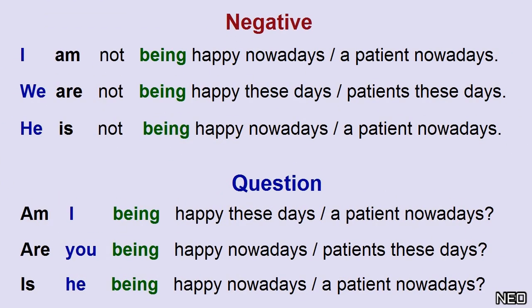Negative: I am not being happy nowadays. We are not being happy nowadays. He is not being happy nowadays. Question: Am I being happy these days? Are you being happy nowadays? Is he being happy nowadays?